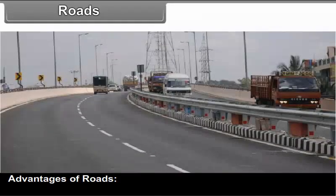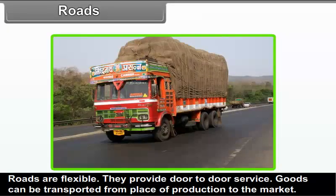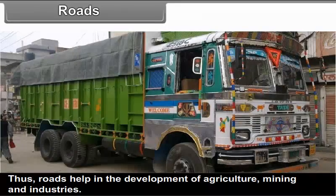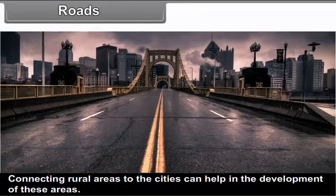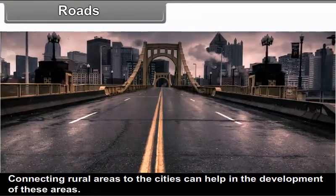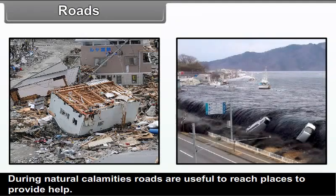Advantages of roads: Roads are flexible and provide door-to-door service. Goods can be transported from place of production to the market, thus helping in the development of agriculture, mining and industries. Connecting rural areas to cities can help in development. A good transportation network also helps in development of tourism. During natural calamities, roads are useful to reach places and provide help.